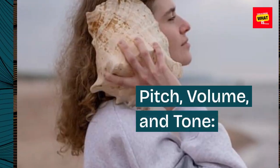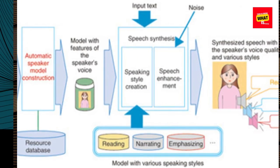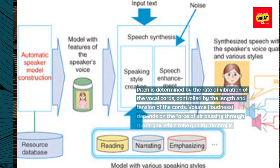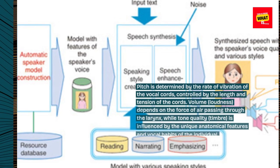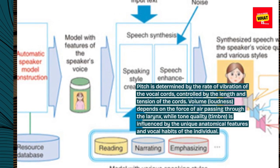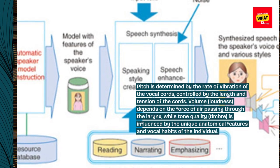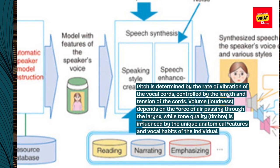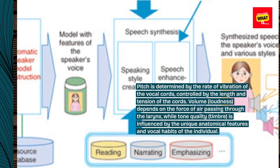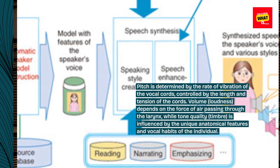Pitch, Volume, and Tone: Pitch is determined by the rate of vibration of the vocal cords, controlled by the length and tension of the cords. Volume, or loudness, depends on the force of air passing through the larynx, while tone quality, or timbre, is influenced by the unique anatomical features and vocal habits of the individual.